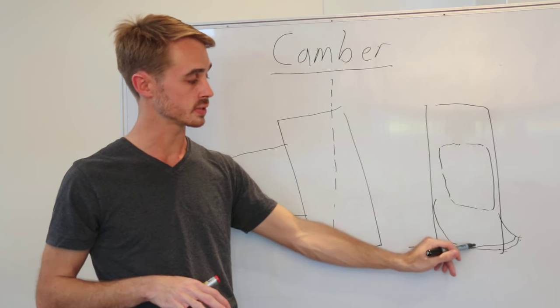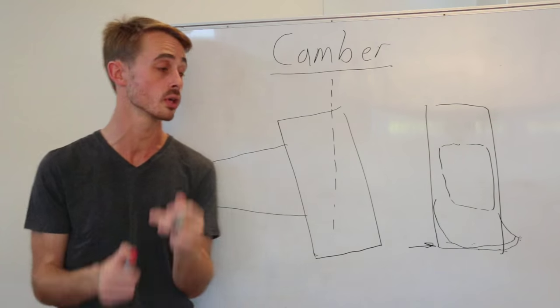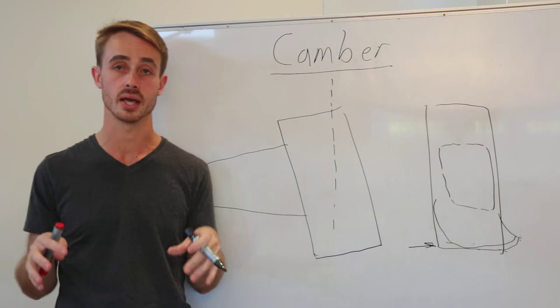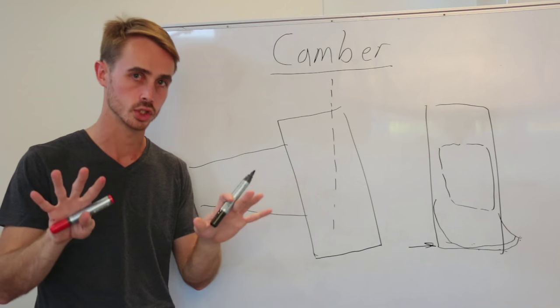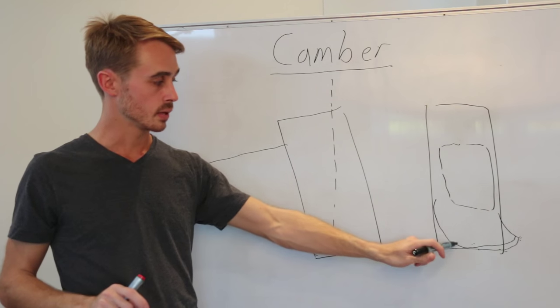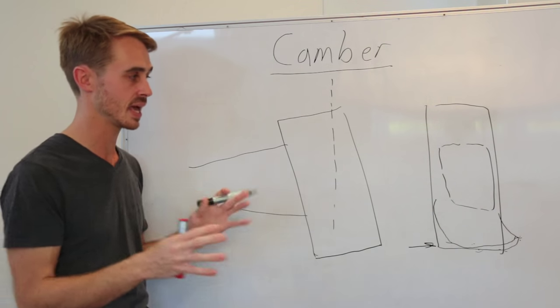And as a result, your actual contact patch size decreases. Now if you watch my video on the physics of tyres, you'll know that contact patch size should be as large as possible to get the maximum amount of grip, generally. So we can see that we don't want this bit coming up like that. So how can we get it to stay down?